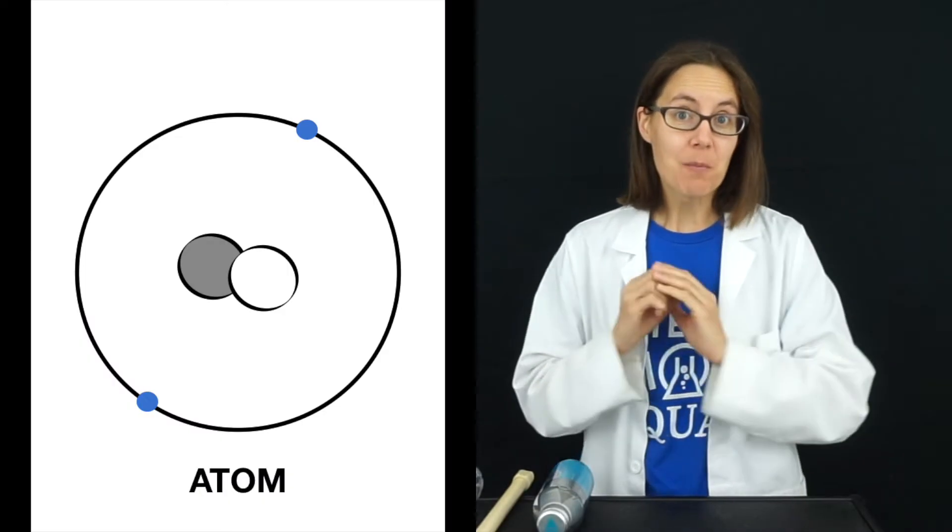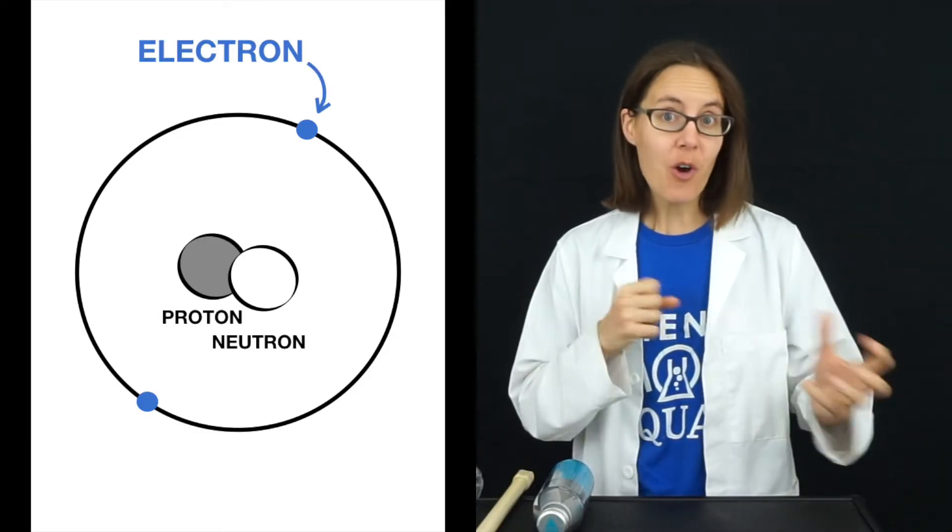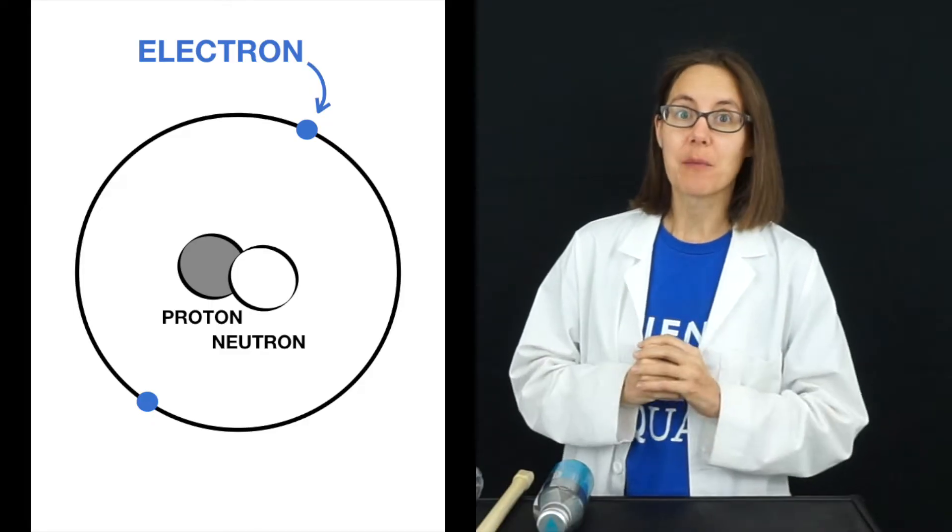All of the material around us that we can touch and see is made up of atoms, and atoms have small particles called electrons. Those electrons can come and go from the atom in the way that the other parts of the atom cannot.